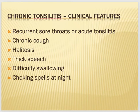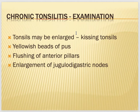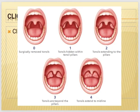Clinical features of chronic tonsillitis also include halitosis (bad breath and bad taste in the mouth) due to pus in the crypts, thick speech, difficulty swallowing, and choking spells at night. On examination, kissing tonsils are tonsils meeting in the midline (chronic parenchymatous); yellowish pus coming out from crypts suggests chronic follicular type; pus can be expressed by pressing on the tonsils. Flushing of the anterior pillars and enlargement of jugulodigastric lymph nodes can also be seen.